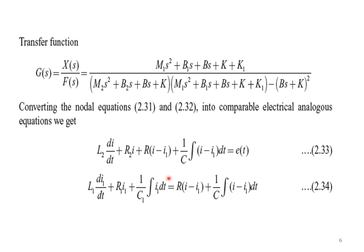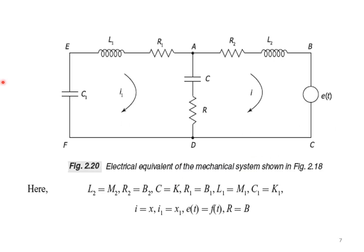For the second equation applying FV analogy: L1·di1/dt + R1·i1 + 1/C·∫i1(t)dt = R(i − i1) + 1/C·∫(i − i1)dt. Using these two equations we write the electrical network in mesh form. Elements experiencing only displacement x1 come in one mesh, and elements experiencing both displacements are connected in parallel. The first mesh has elements C1, L1, R (from the second equation), while R, C connecting (i − i1) and R2, L2 are in the second mesh along with voltage E(t).